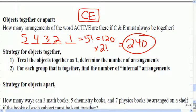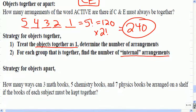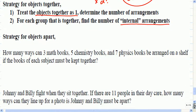Okay. So that's the strategy we're going to use here. Is we want to treat objects that are together as one. We're going to say that because they're stuck together, that is one object now. Then what we want to do is figure out how many internal arrangements we can make. That's how much they can move within their group. Okay. So we'll practice this. But before we do, let's find a strategy for objects apart. Can anyone come up with a strategy for objects apart?